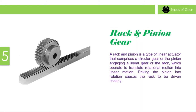Rack and pinion gear: A rack and pinion is a type of linear actuator that comprises a circular gear, or the pinion, engaging a linear gear, or the rack, which operates to translate rotational motion into linear motion. Driving the pinion into rotation causes the rack to be driven linearly.